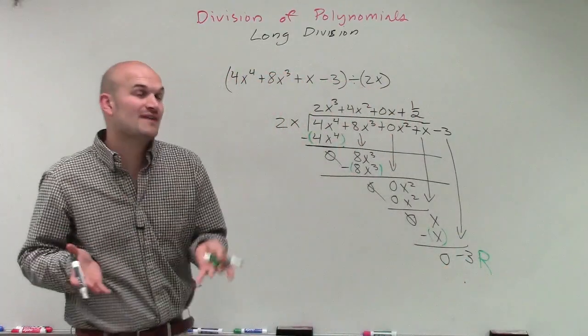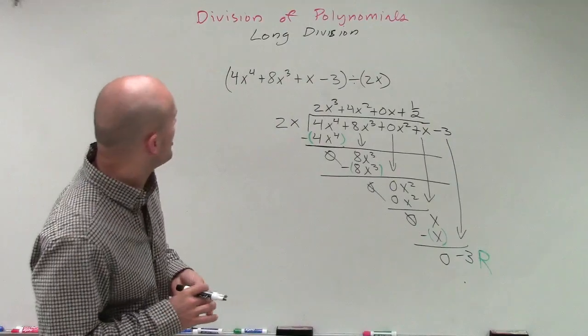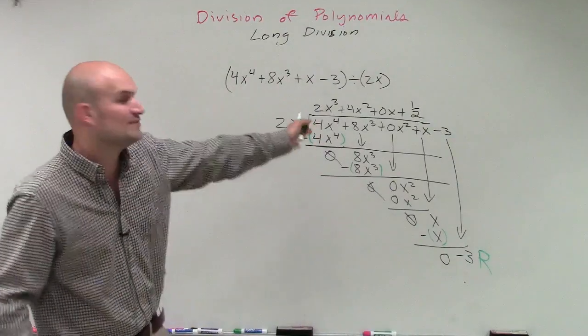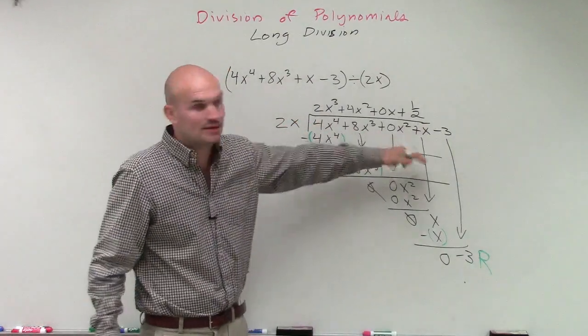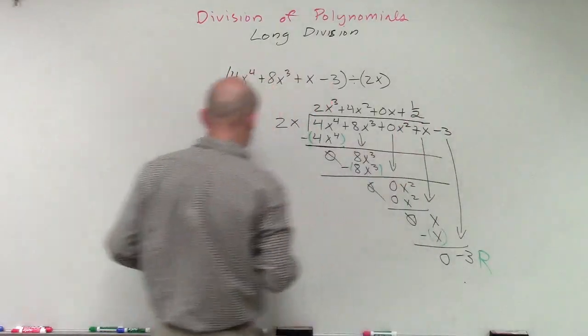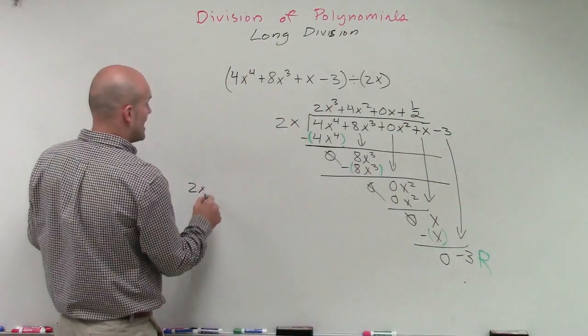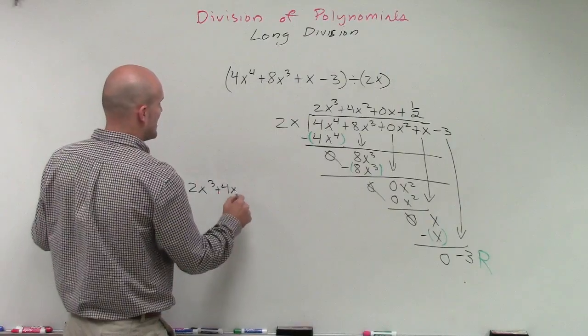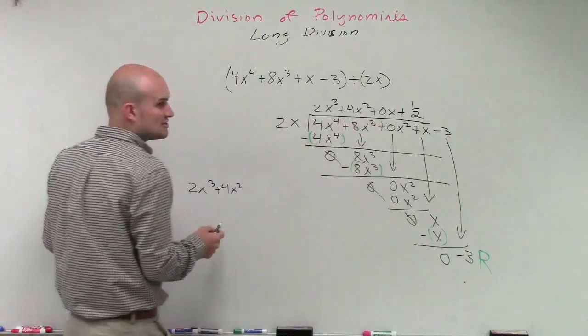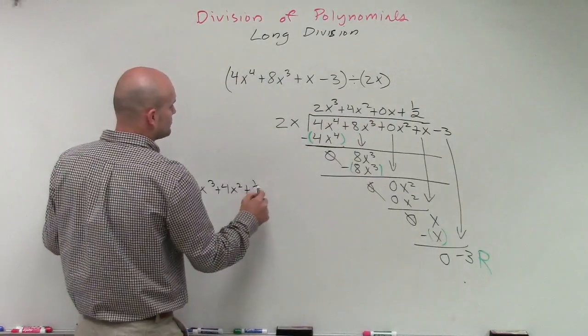So that's going to be our remaining value. So our term, 2x, does not divide evenly into our polynomial. Therefore, when writing our answer, our quotient, we can write it as 2x cubed plus 4x squared. We do not need to write our 0x term plus 1 half.